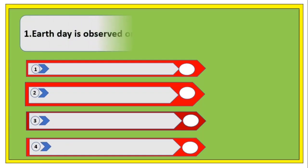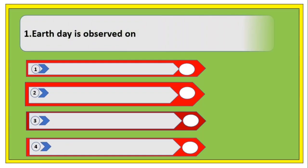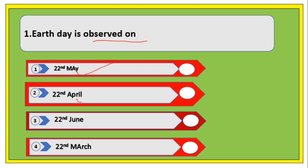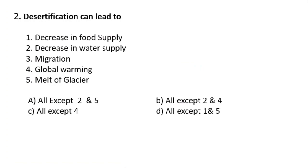We'll start with the first question: Earth Day is observed on which date? Options are 22nd May, 22nd April, 22nd June, and 22nd March. The right answer is 22nd April.